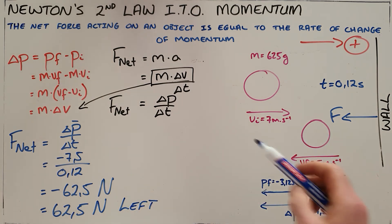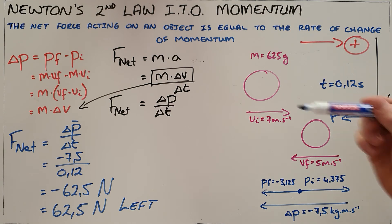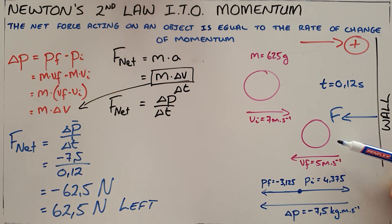This should make sense to us, because as the ball strikes the wall, the wall is applying a force to the left to accelerate the ball towards the left, which is the direction it travels in the end.